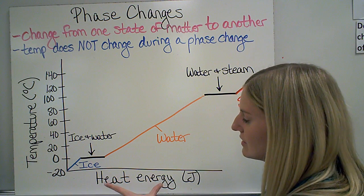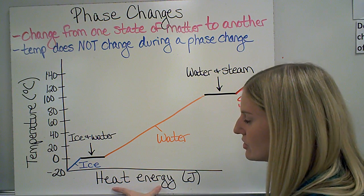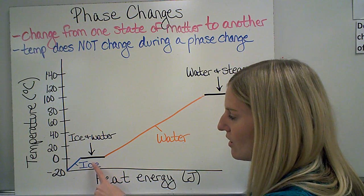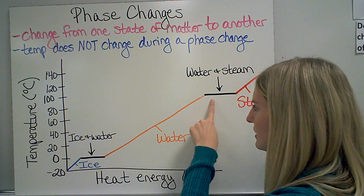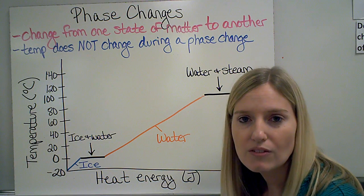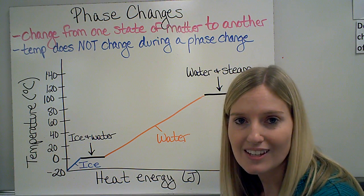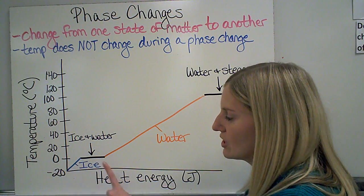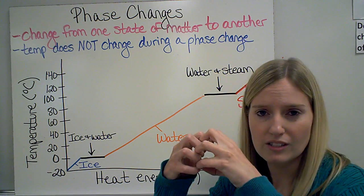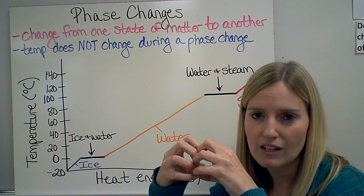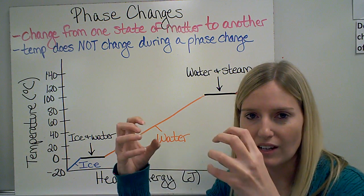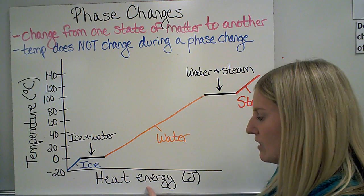So what's happening is my heat energy is increasing, but the temperature is not always increasing along with it. What's happening during the phase changes is the attractions that are between those particles, keeping them close together — those attractions get broken by the extra energy.